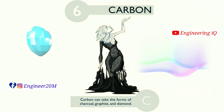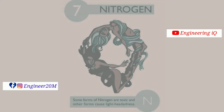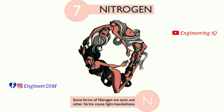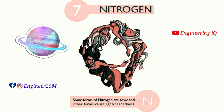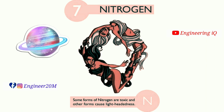Carbon: atomic number of carbon is 6. Carbon can take the form of charcoal, graphite, and diamond. It is denoted by C. Nitrogen: atomic number of nitrogen is 7. Some forms of nitrogen are toxic and other forms cause lightheadedness. It is denoted by N.